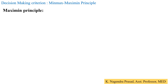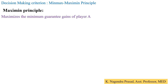The maximin principle means: maximize the minimum guaranteed gains of player A. In the pure strategy game, player A always maximizes the minimum guaranteed gains. Since all of player A's strategies are represented row-wise, we select the minimum values in each row, and among those minimum values we select the maximum value — that is what we call the maximin principle.